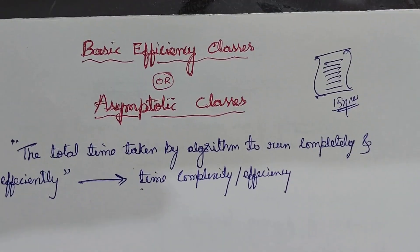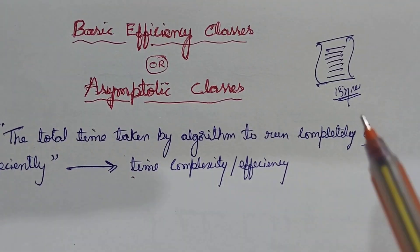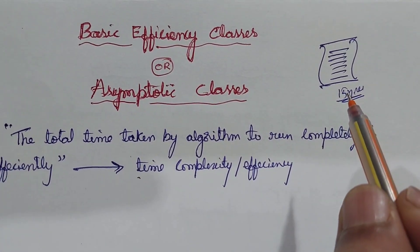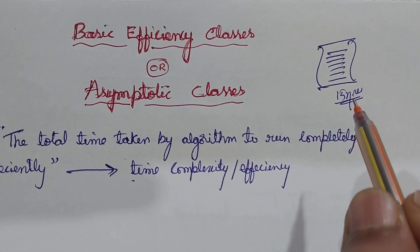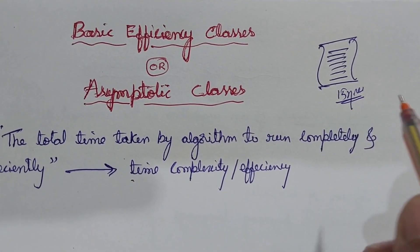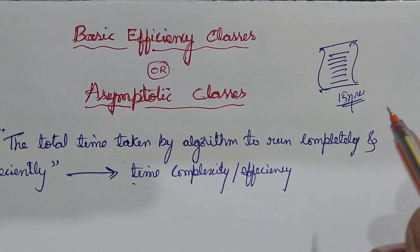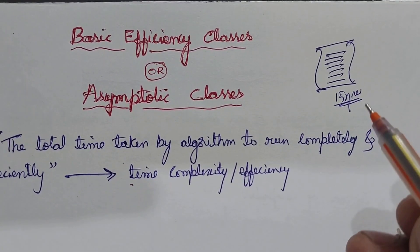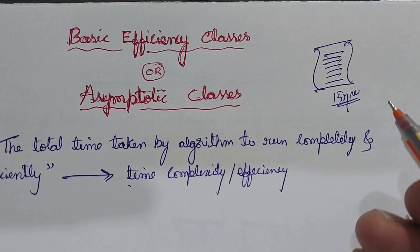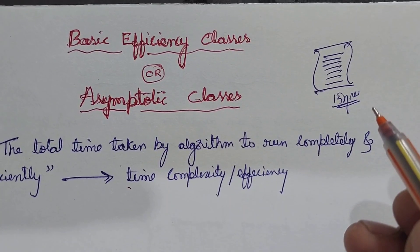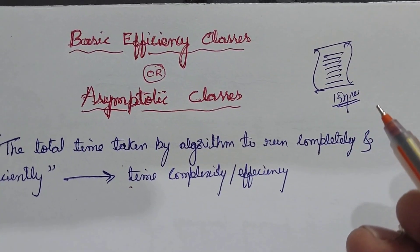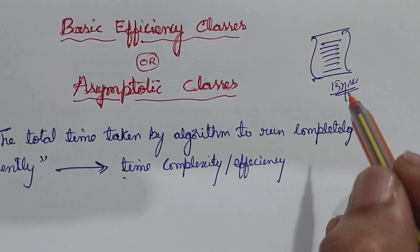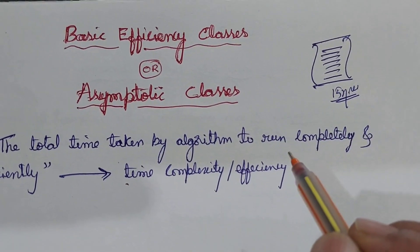In general, we should not express the time complexity of any algorithm in terms of constants like 50 nanoseconds, 20 nanoseconds, 80 microseconds, or certain milliseconds. We should not use any numbers to represent the time complexity.